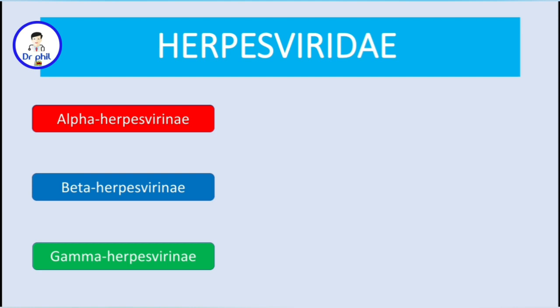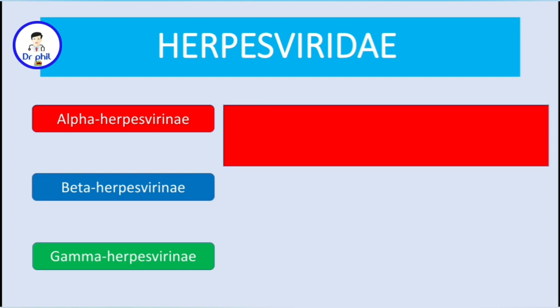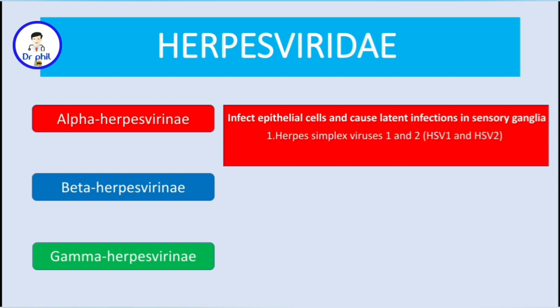On alpha-herpesvirinae, these viruses usually infect epithelial cells and cause latent infections in sensory ganglia. The species in this sub-family include herpes simplex viruses 1 and 2 — HSV-1 and HSV-2 — and also varicella zoster virus, or VZV, also known as human herpes virus 3.